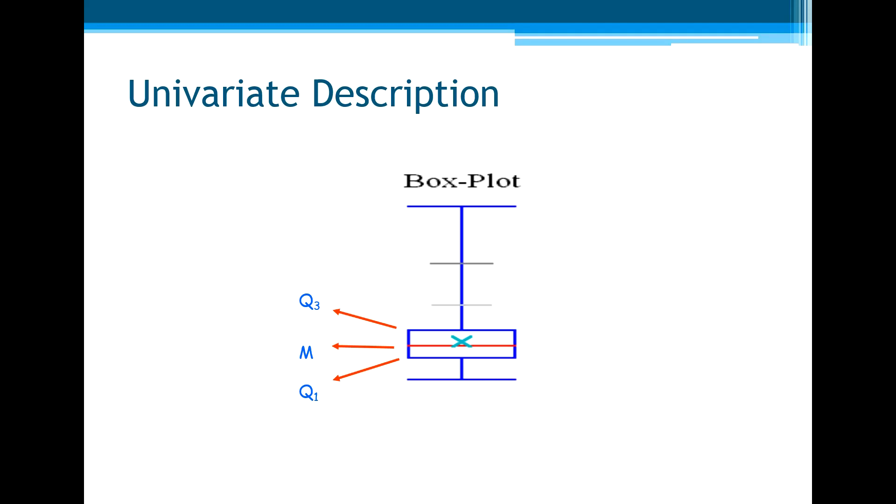This is just a box bounded by the first and third quartile with the median. The two whiskers, above and behind the box, go until the maximum and the minimum.